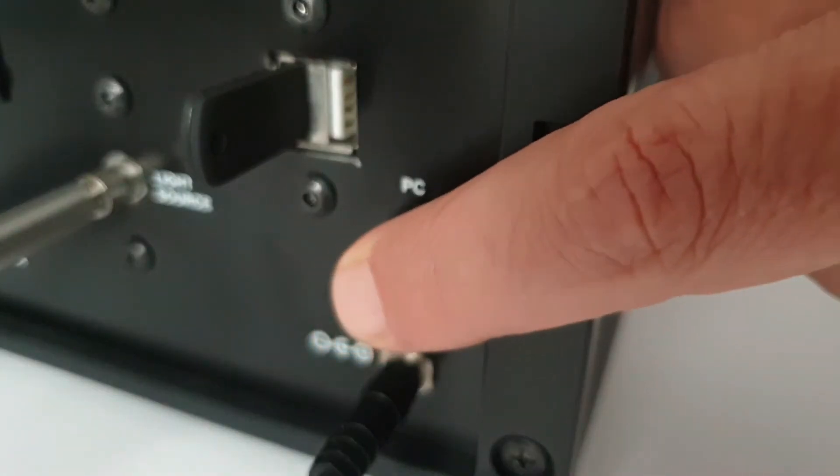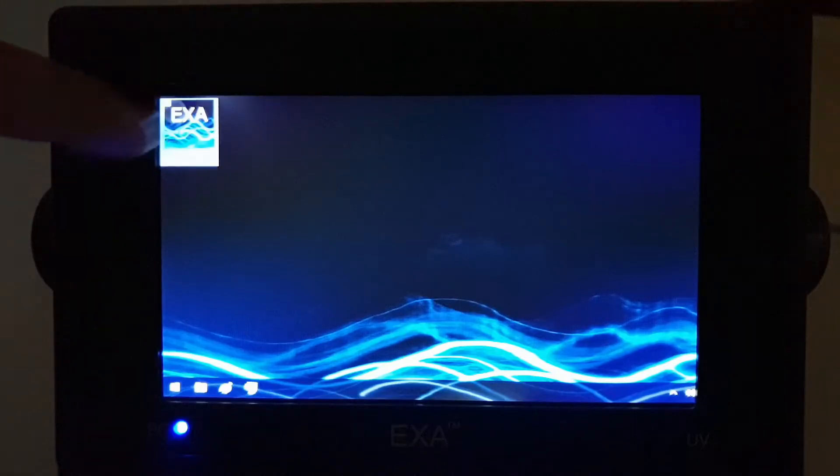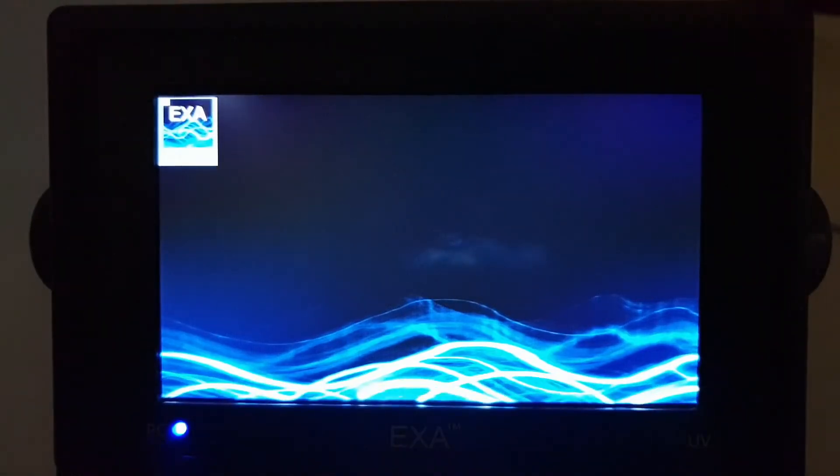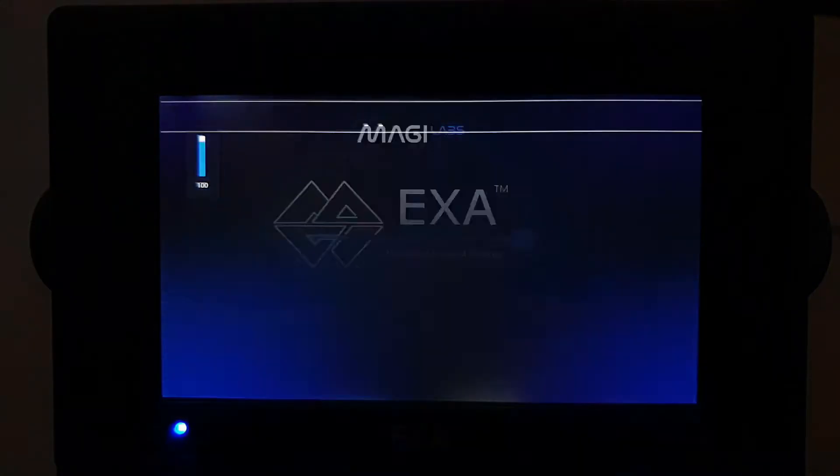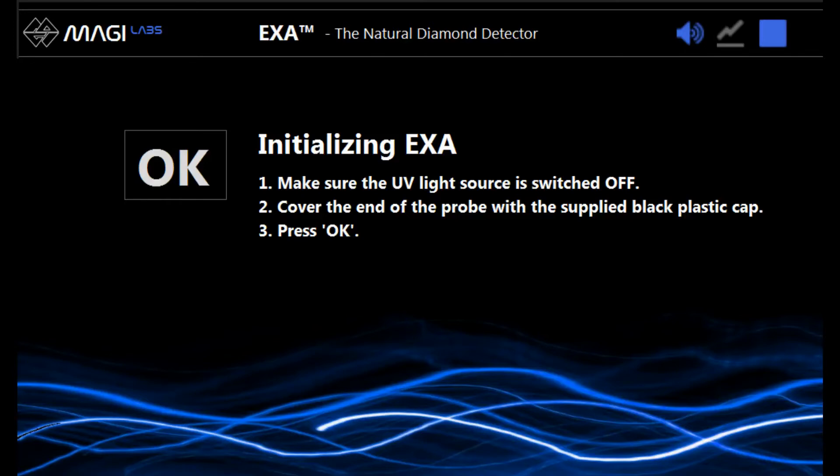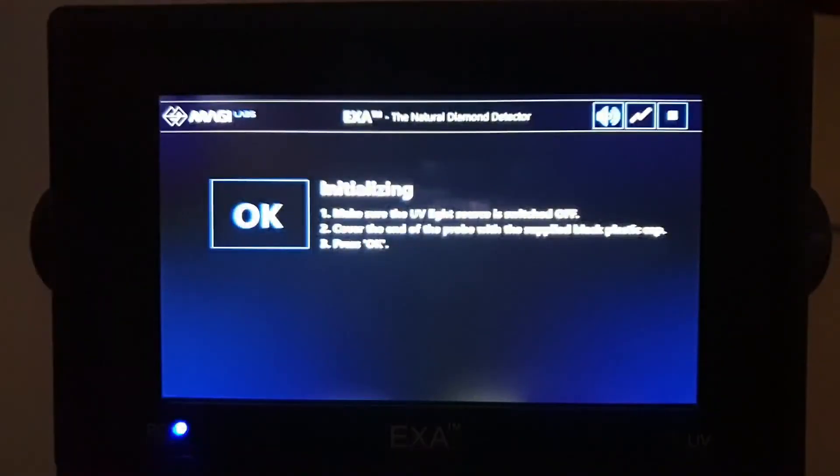Press the ON-OFF button on the rear panel of the EXA. Click on the EXA icon on the screen. Make sure the UV light is off, cover the end of the probe with the supplied plastic cup and press OK.